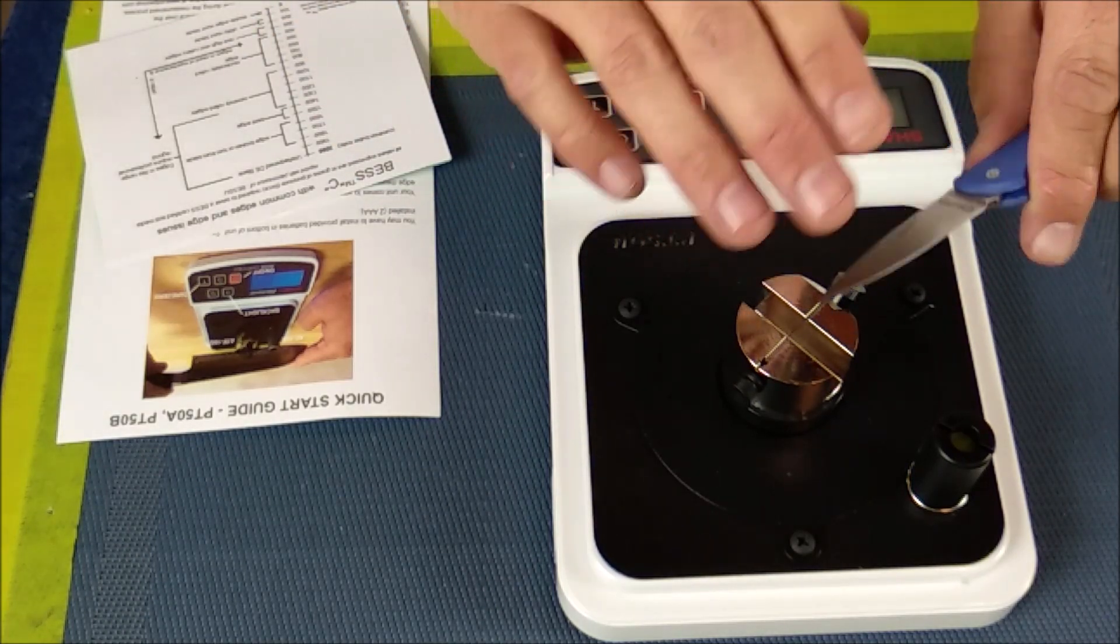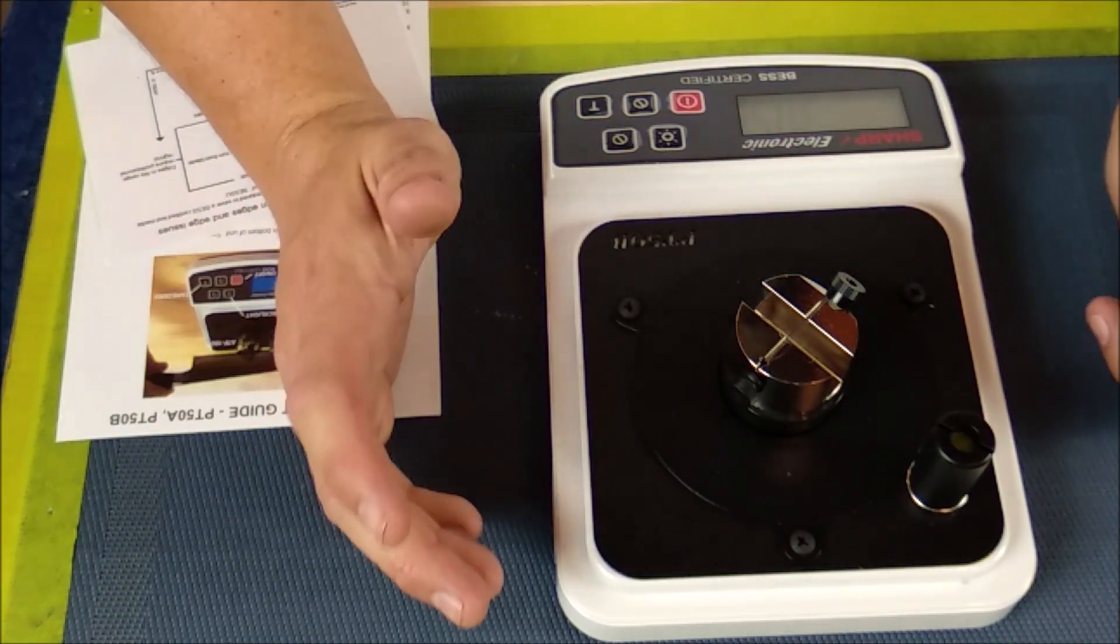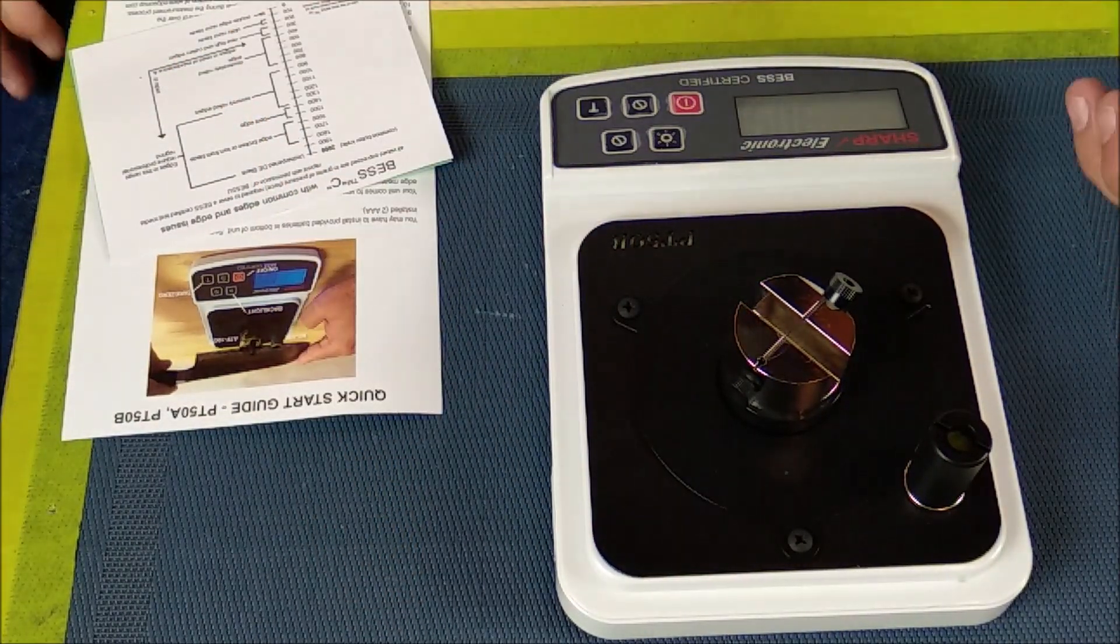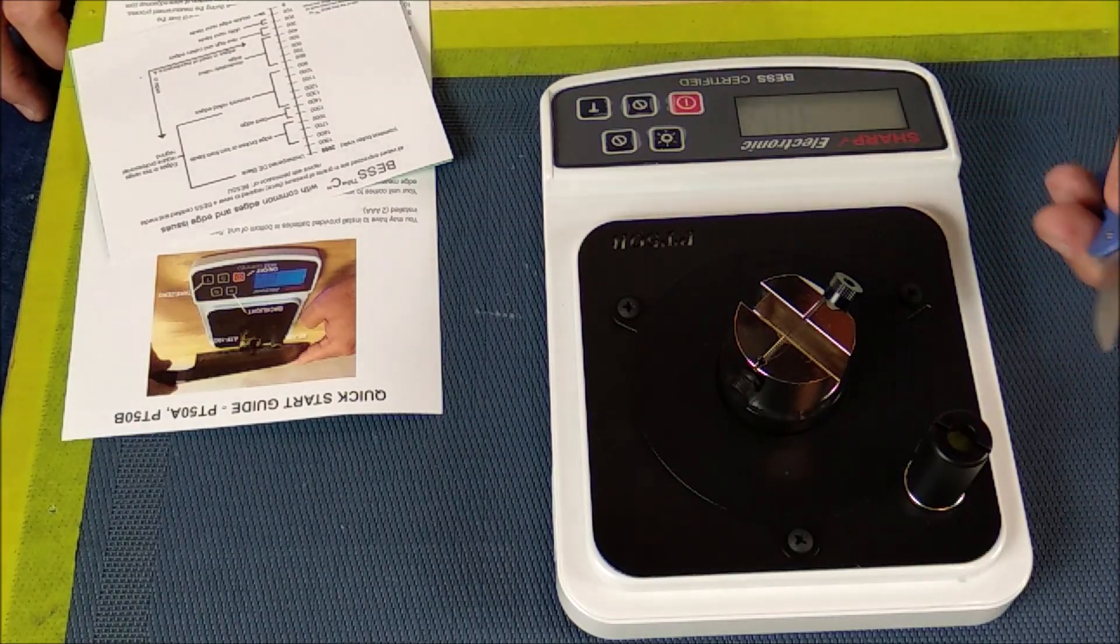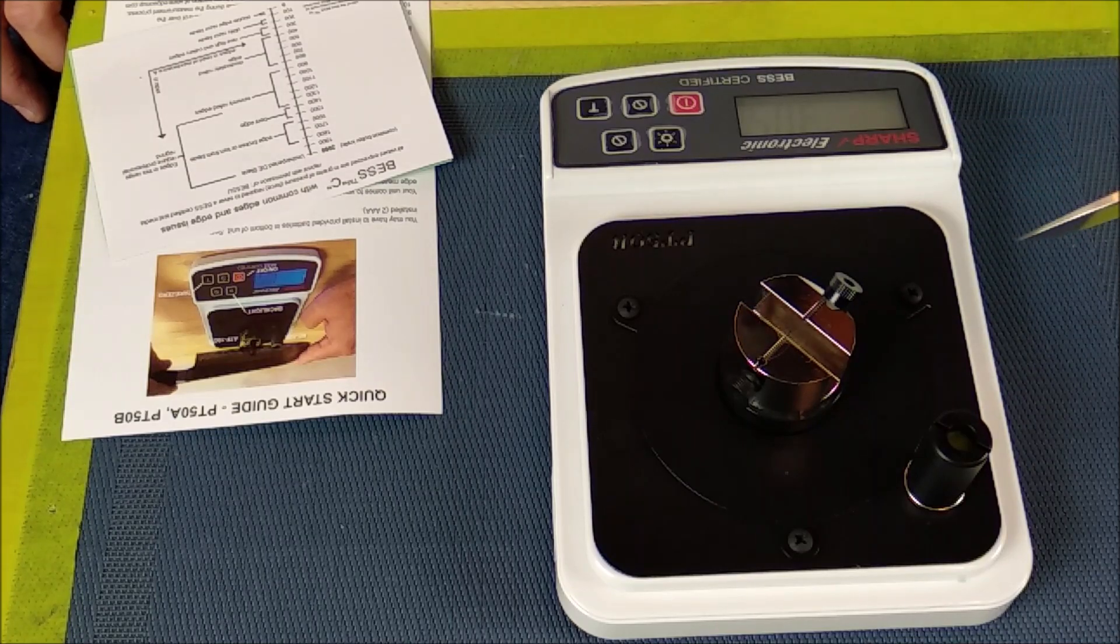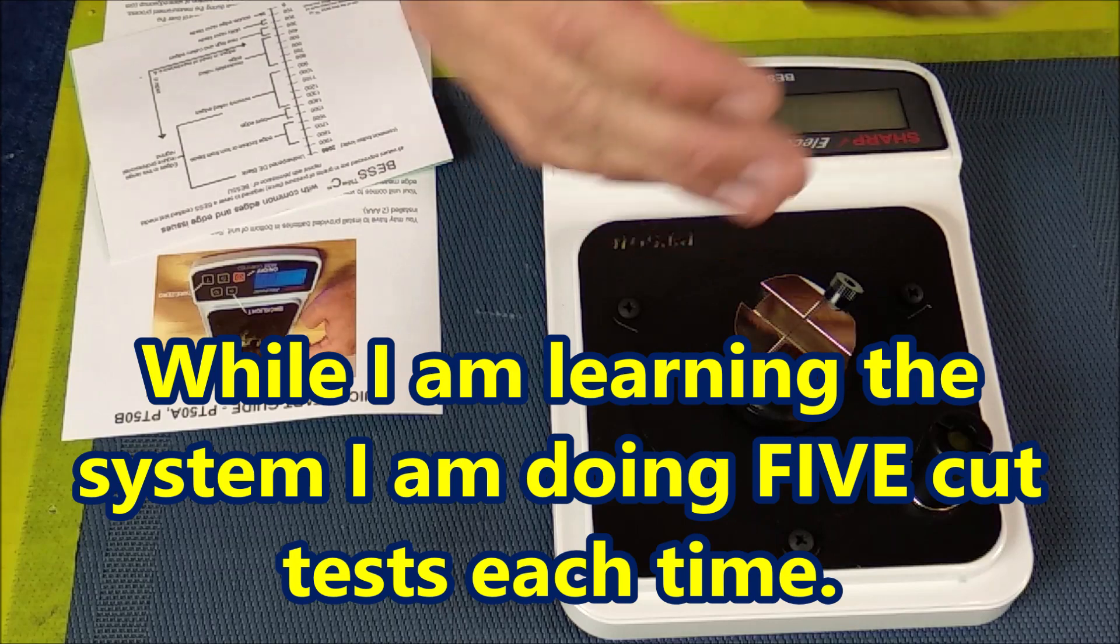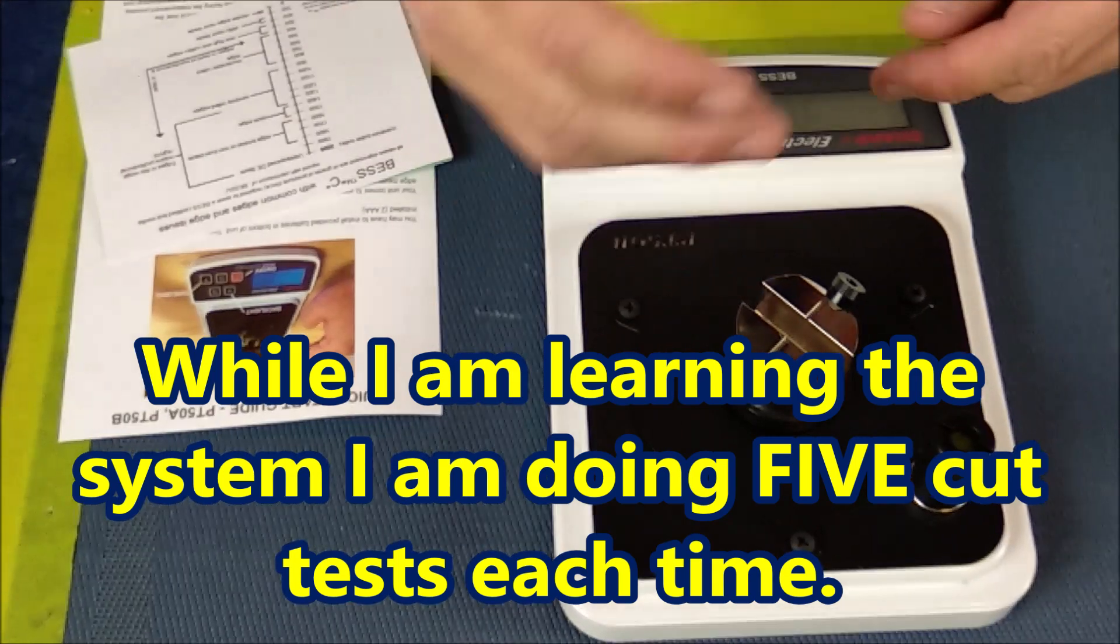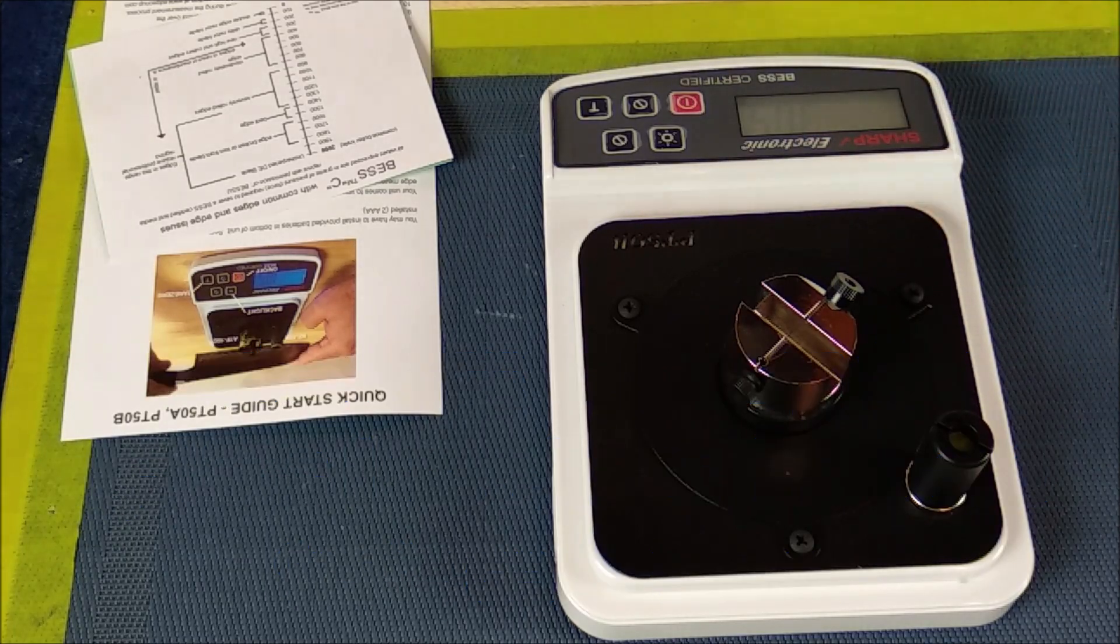Now the way I would test this if I wanted to see how good this edge remains is I would sharpen it to 20 degrees per side all the way up to a given grit, and I think I'm going to do it up to a thousand and then ten strokes on my stropping. Then I'll measure the first number and I'll measure it again, and if there's a fluctuation I'll do it a third time to get a good average.